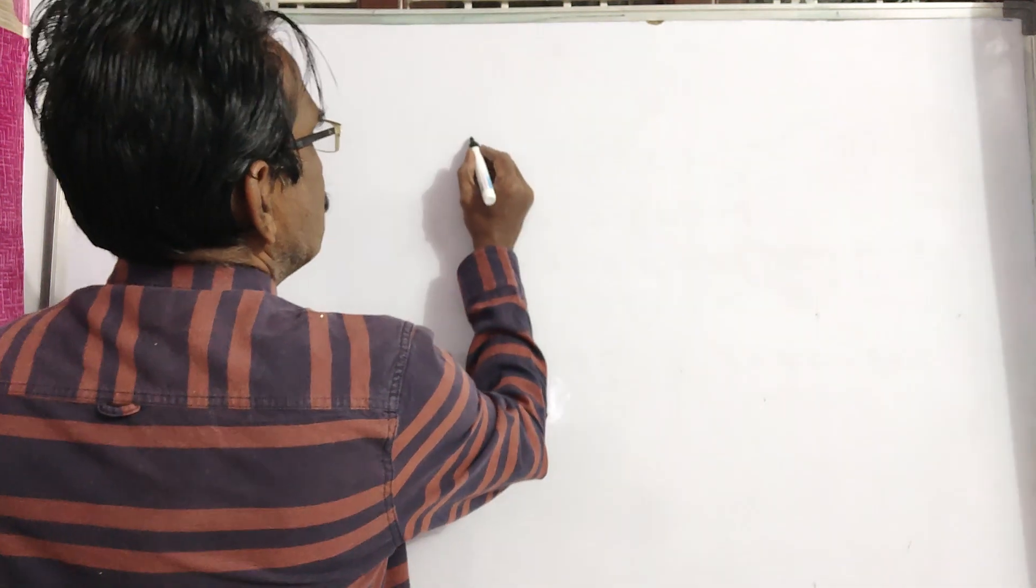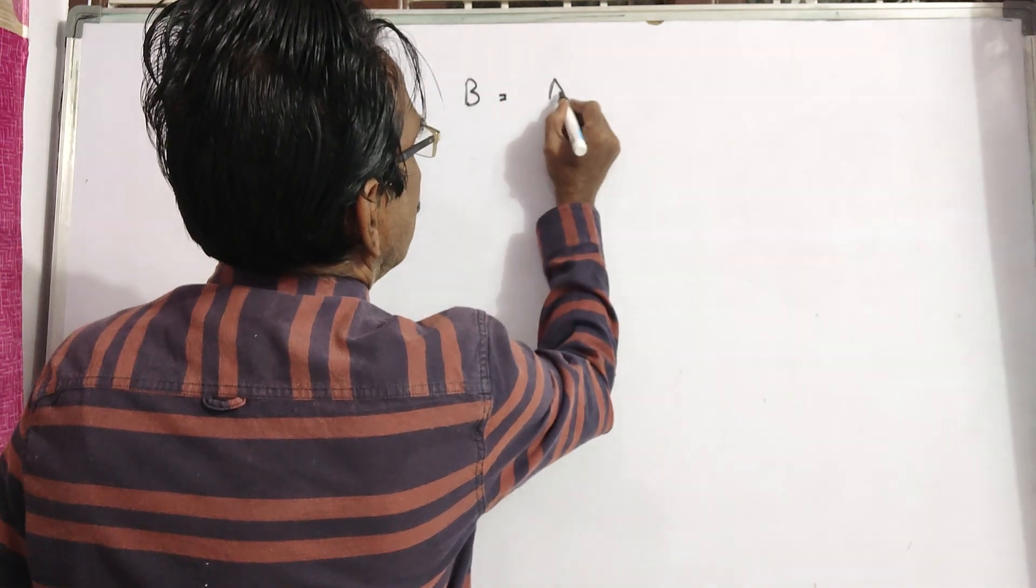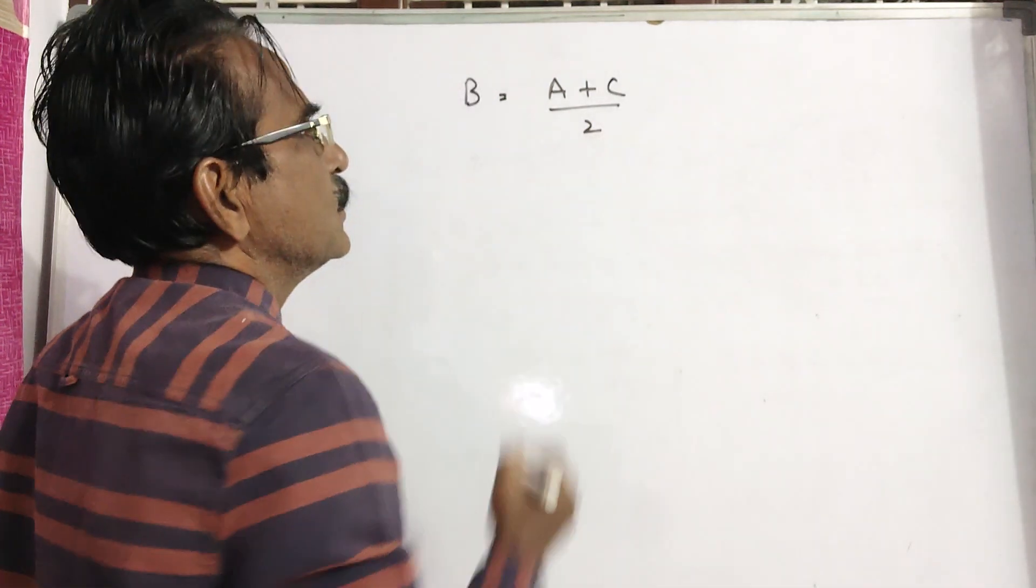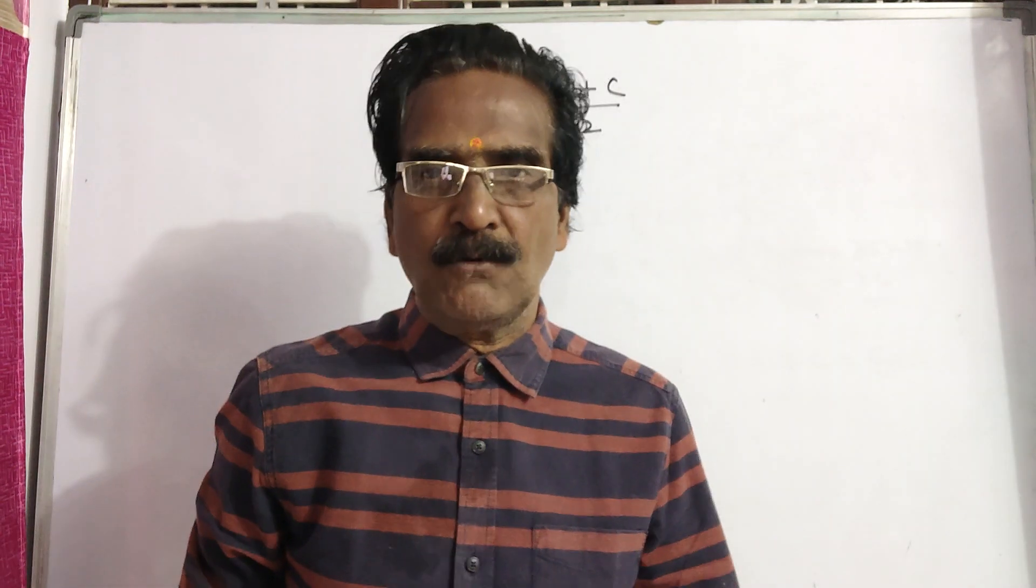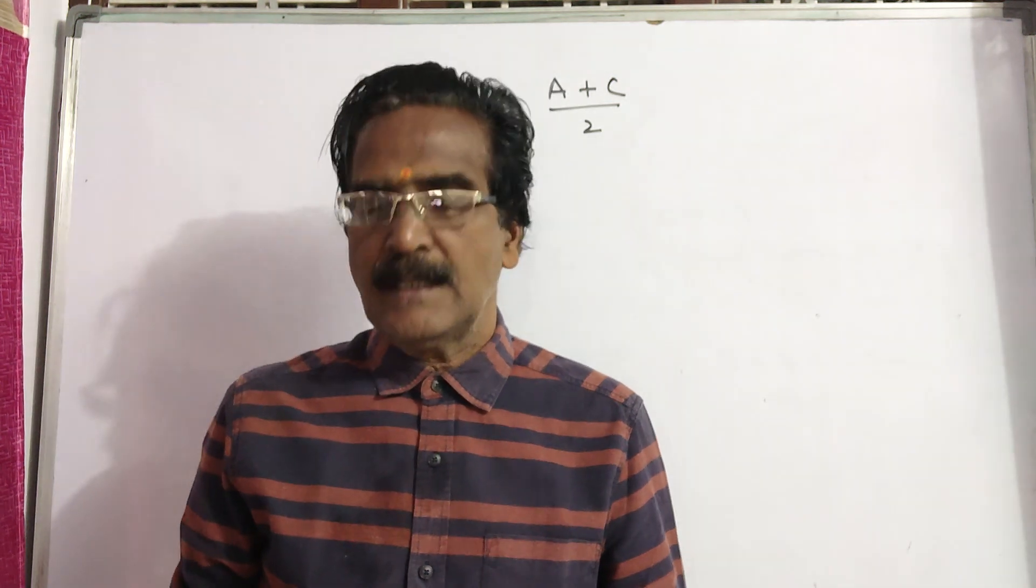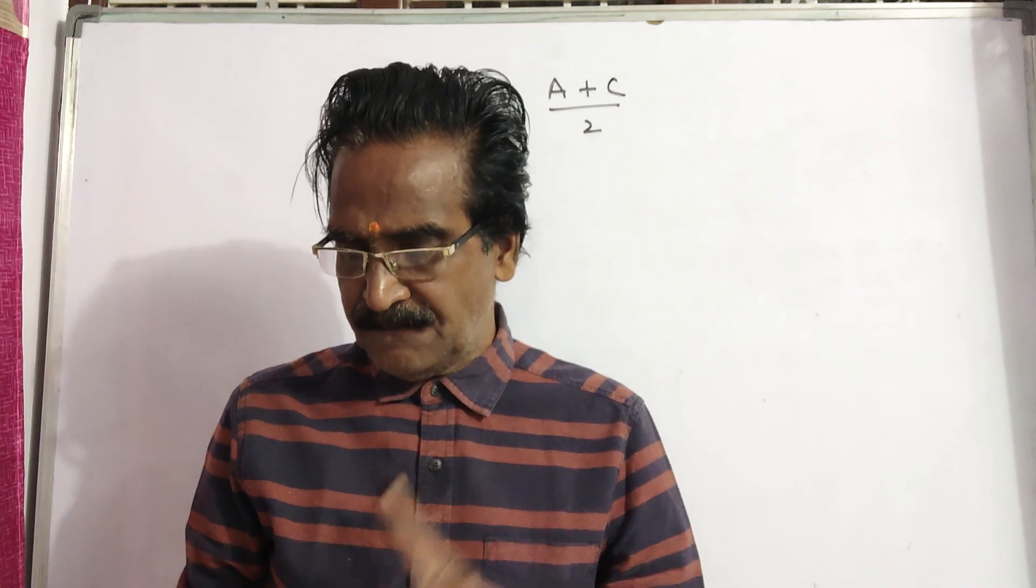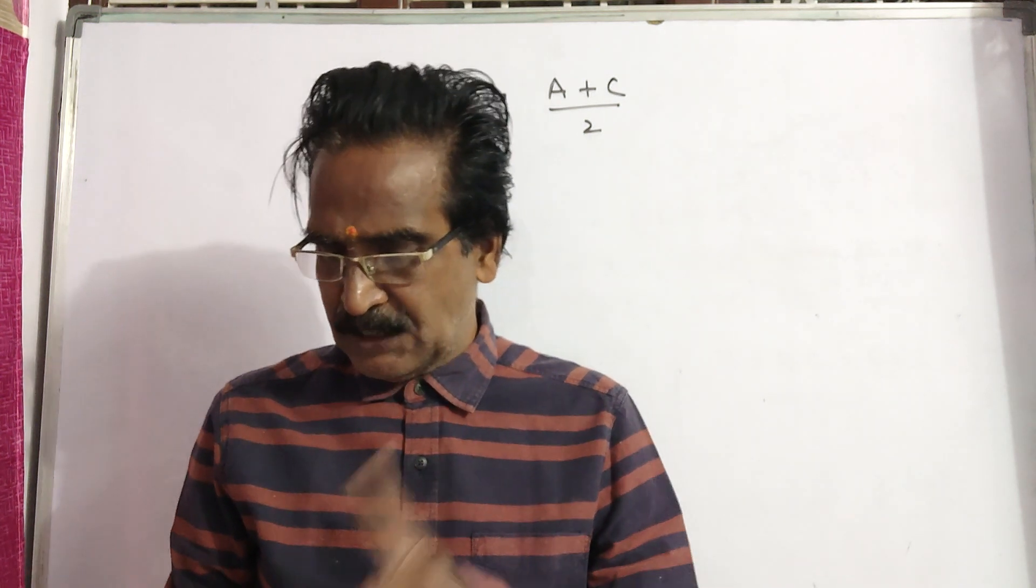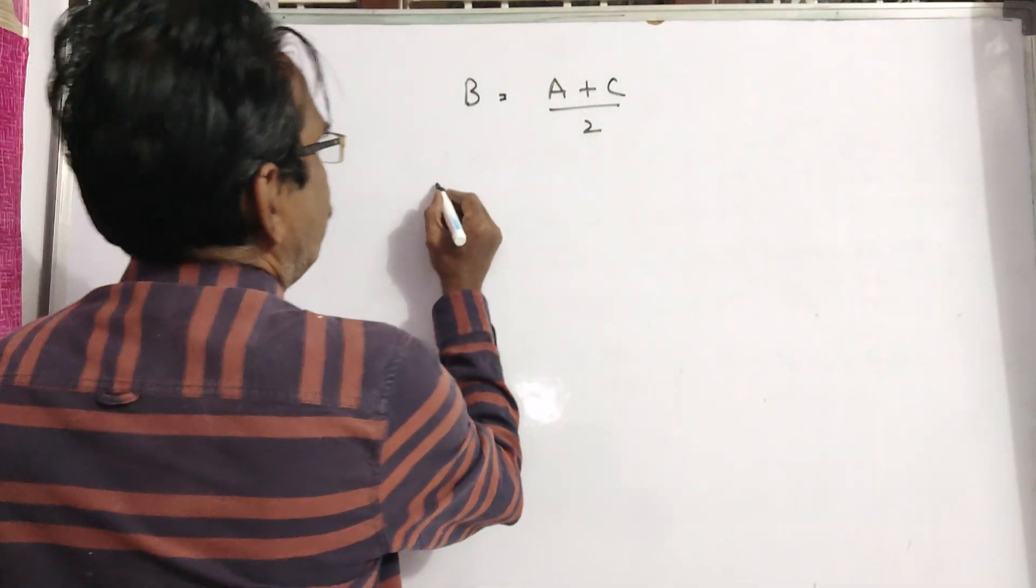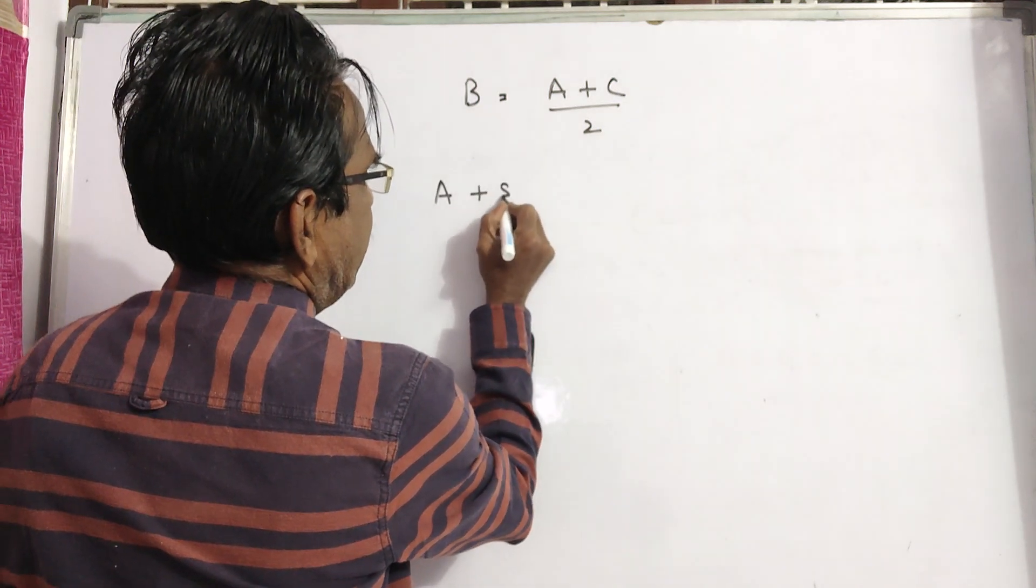So A plus C by 2, B is equal to A plus C by 2. Then 8 years from now, A's age and C's age will be 75% of C's age and the total will be 84.